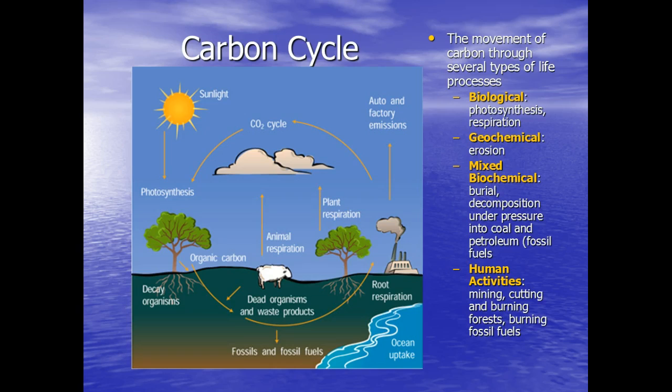And then you also have human activities: mining, cutting and burning forests, and burning of fossil fuels. So take a look at this, and we've got to show that it's a cycle. So it just keeps going in a circle or a loop.